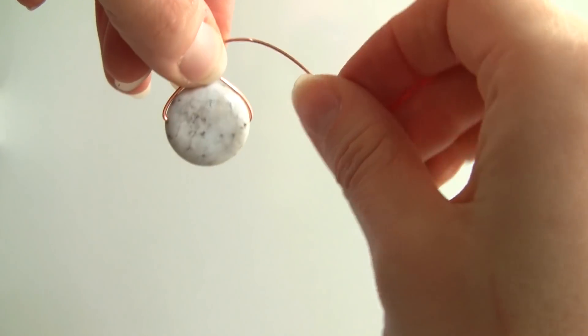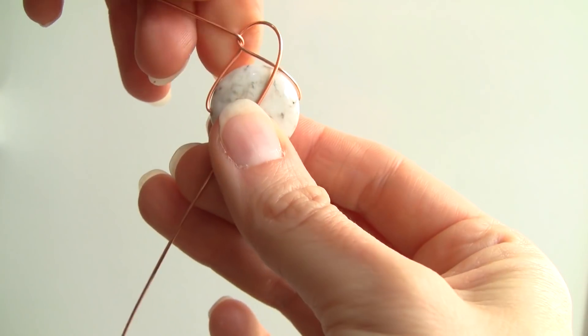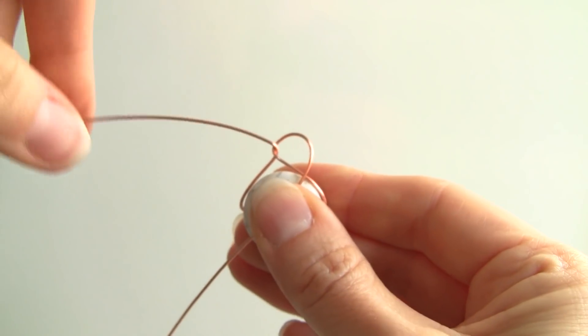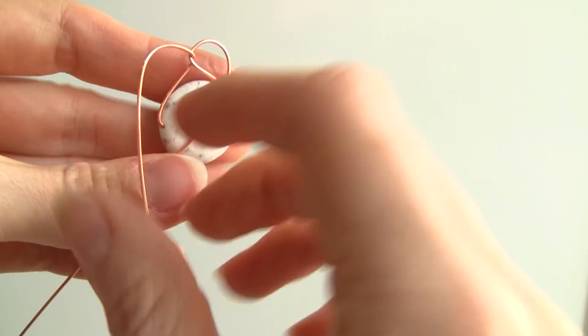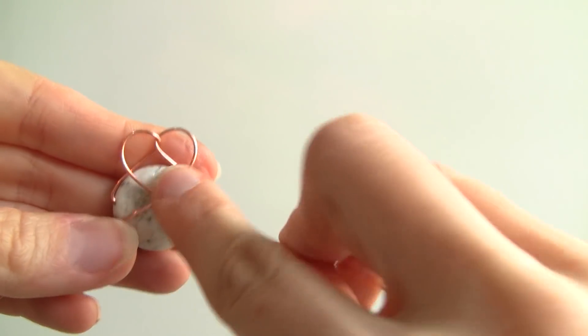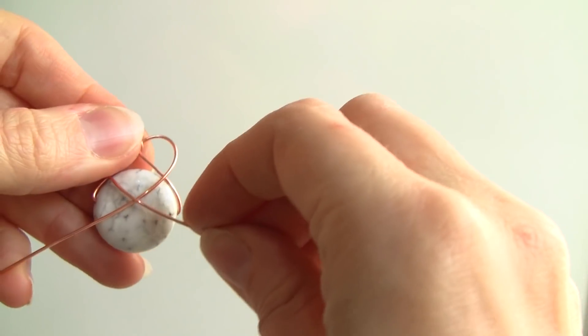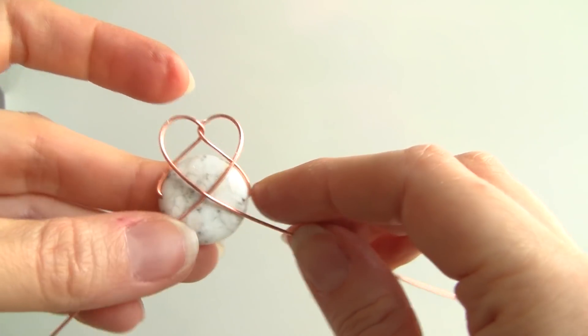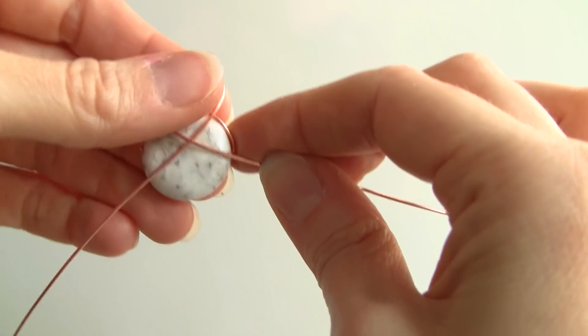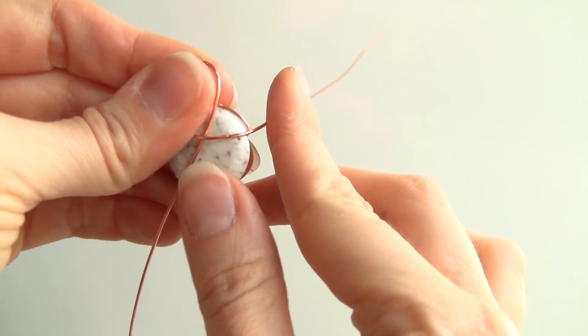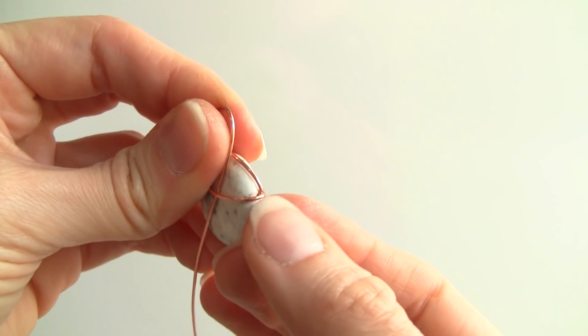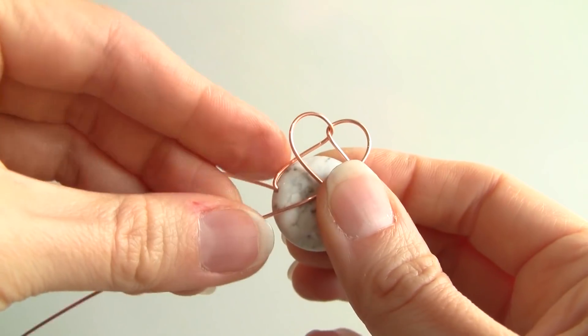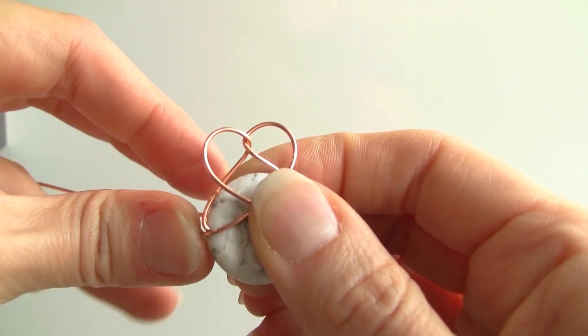And then once you do that, you just take one side and you fold it down to roughly right here and then the tricky part is getting the sides to match because it forms like a little heart. You don't want the heart to be crooked or lopsided. So once you get it to right underneath where this wire is going through the hole, go ahead and bend it forward.